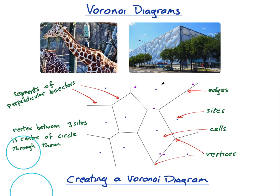Now I want to go through some technical terms. Edges are the boundaries of the regions — this is an edge, this is an edge, and so on. Sites are what I've called schools — these points here are the sites. Cells are the regions themselves — this is a cell, this is a cell, and so on. Each cell contains exactly one site.